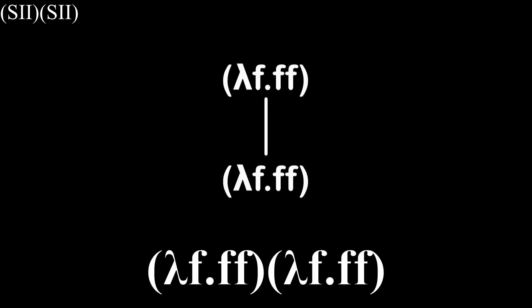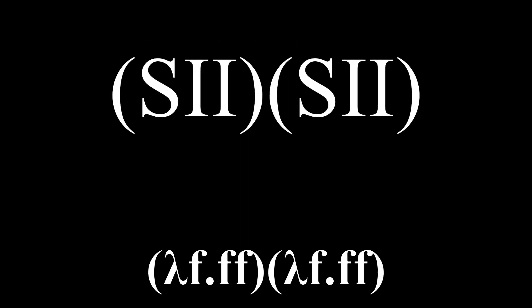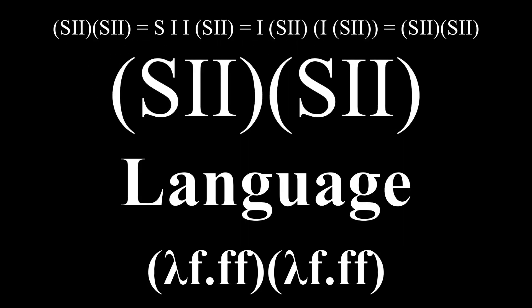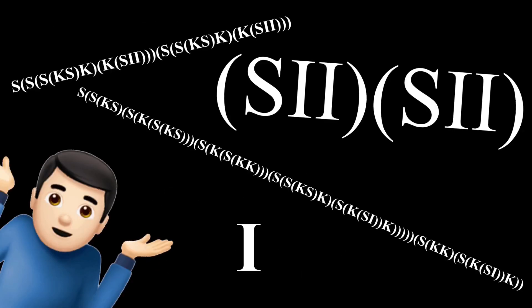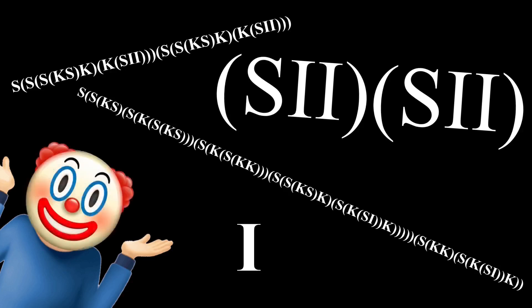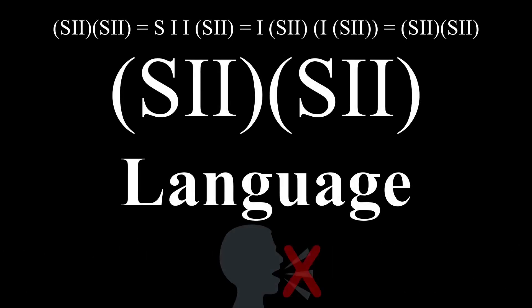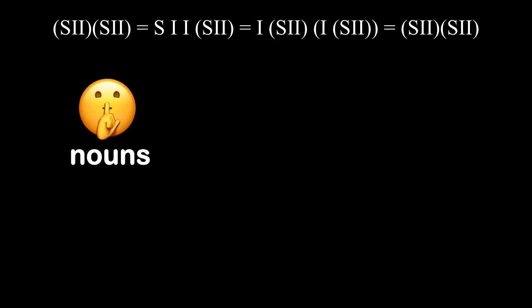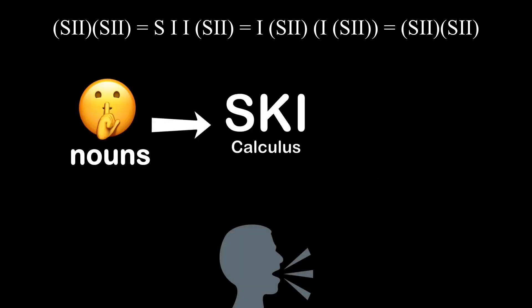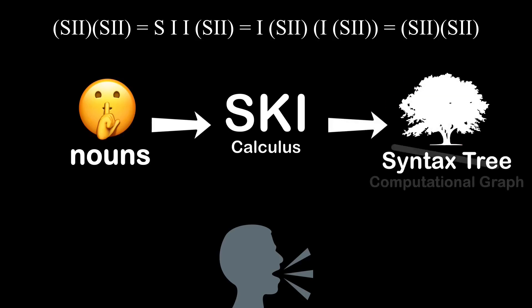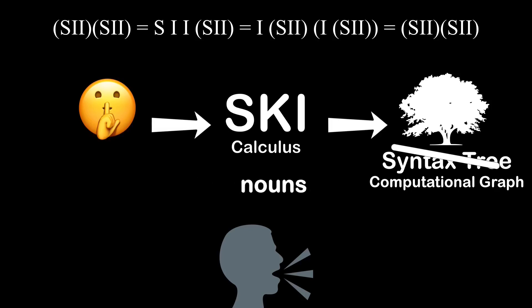And that funny infinitely-busy Lambda expression shown earlier? The SKI equivalent of it is... How is this a human language? Literally, all we have is a bunch of functions. But here's where things get interesting. This language has a bunch of words in it, but none of them are spoken. All the nouns are implicit. So what the speakers do is use SKI Calculus to create a syntax tree — or rather a computational graph — for those implicit content words to reside in.